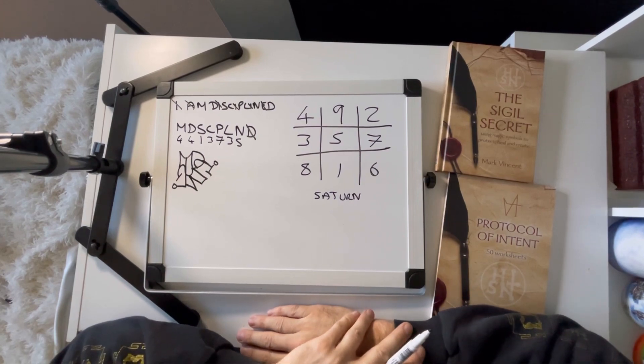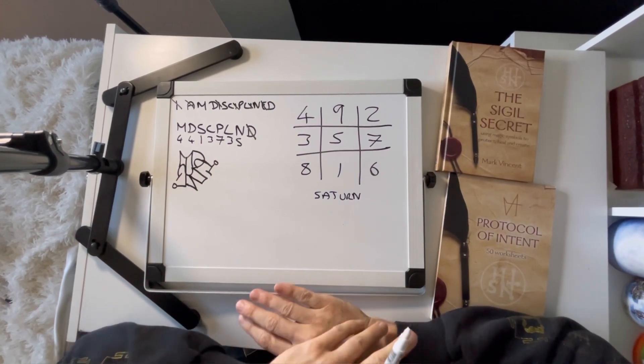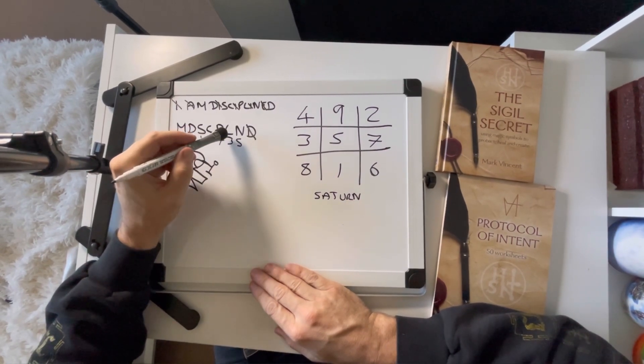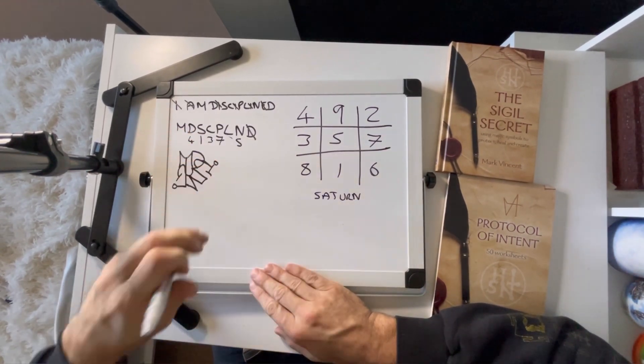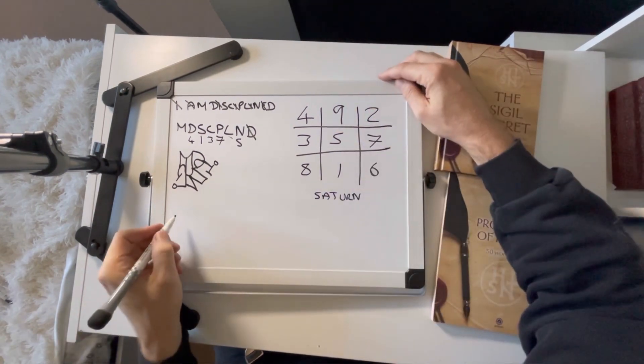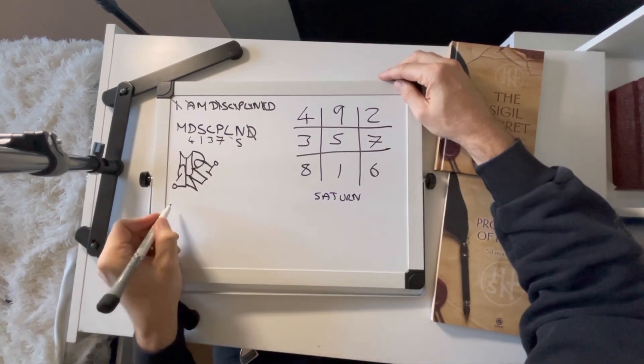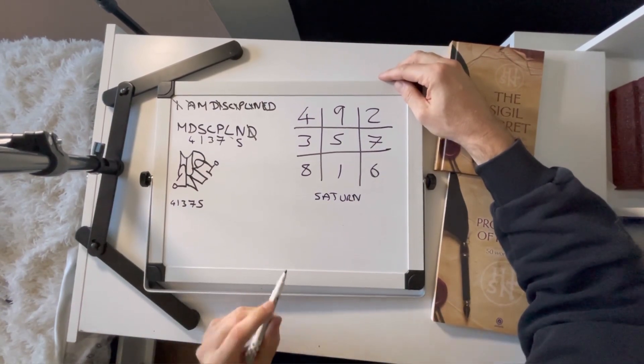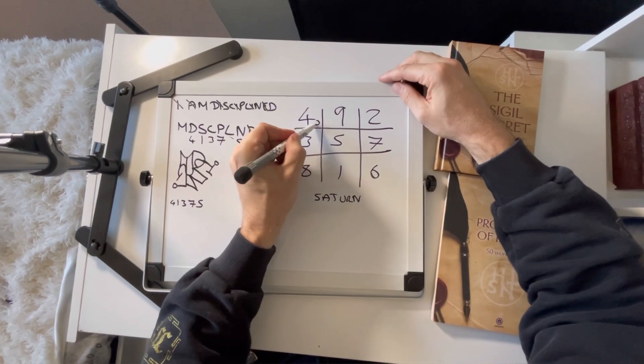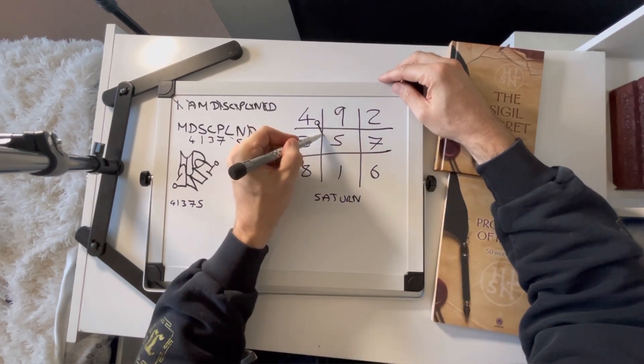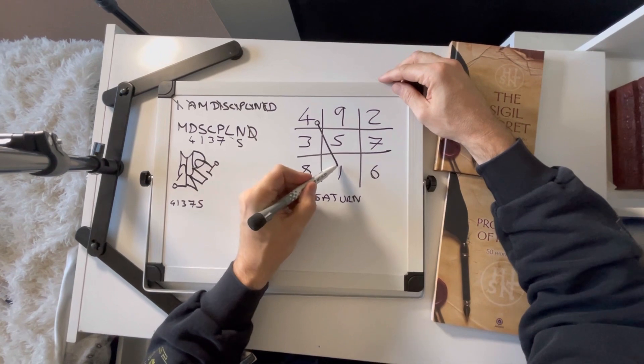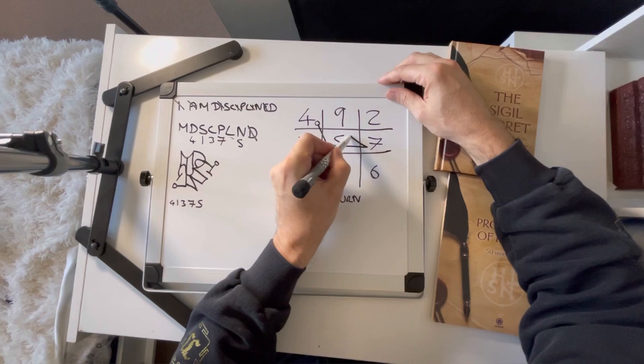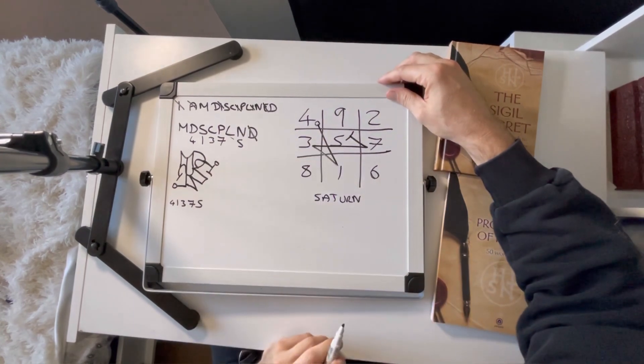Now, to simplify the sigil, I'm going to remove the duplicates because I think it's going to get a bit messy otherwise. But you don't have to. And I'll show you on another one. So we're going to use 4, 1, 3, 7, 5. So we're going to start at the number 4 and put a little circle there. A line down from 4 to 1. From 1 up to 3. And 3 across to 7. And then from 7 back to 5. And there we have it.